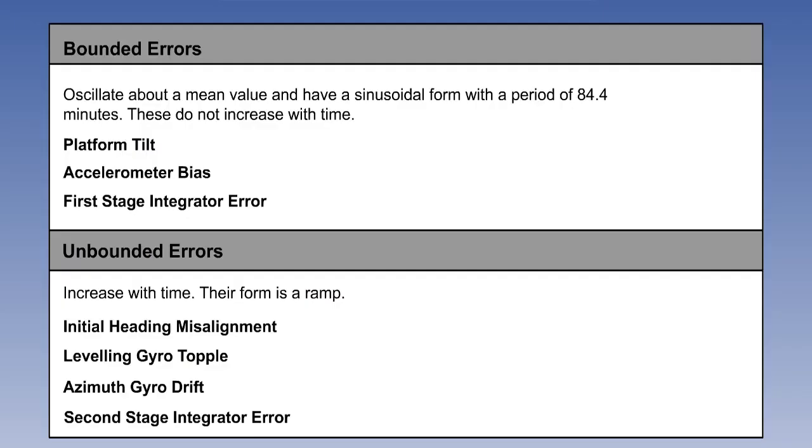Here is a summary of INS errors. Bounded errors oscillate about a mean value and have a sinusoidal form with a period of 84.4 minutes. They do not increase with time. They consist of platform tilt, accelerometer bias, and first stage integrator error.